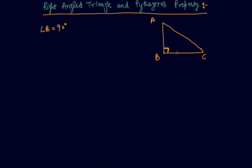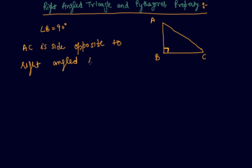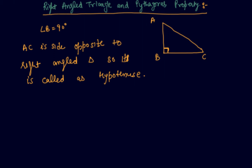This is called a right angle triangle. The side opposite to the right angle — side AC — is called the hypotenuse. As you can see directly from the figure, this side AC is opposite to the right angle, so we call AC the hypotenuse of this triangle.